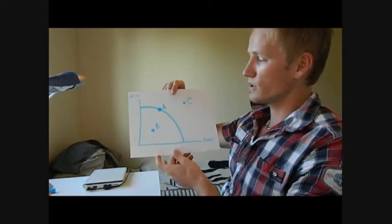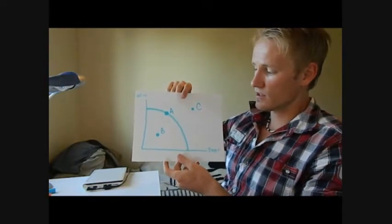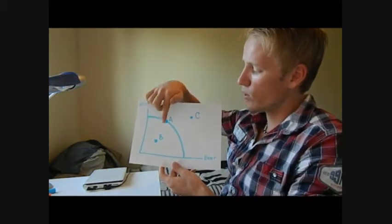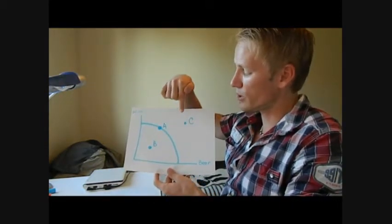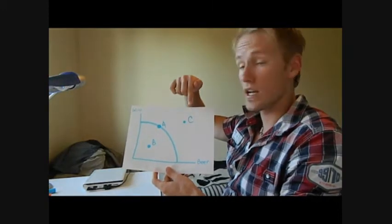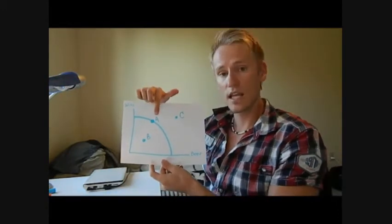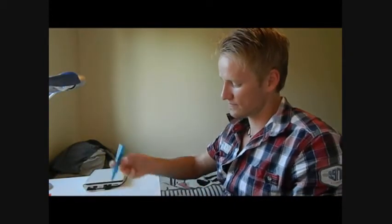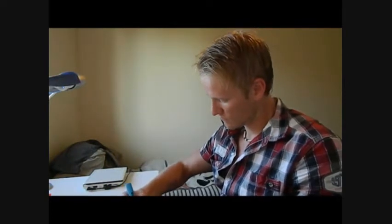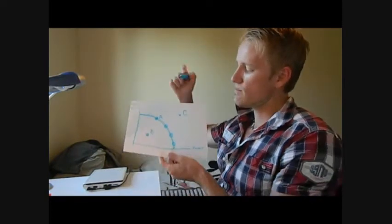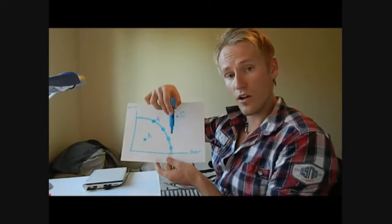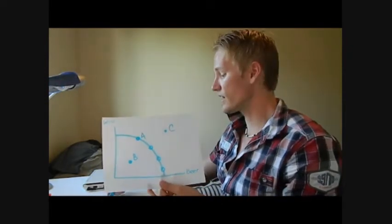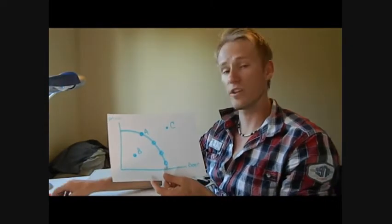I've drawn a PPF comparing the production of wine and beer. When we look at point B, this is an inefficient point. Point C is an unobtainable point. Point A is one of the efficient points — but A is not the only efficient point. Any point on the curve is efficient; we are maximizing the use of land, labor, and capital.